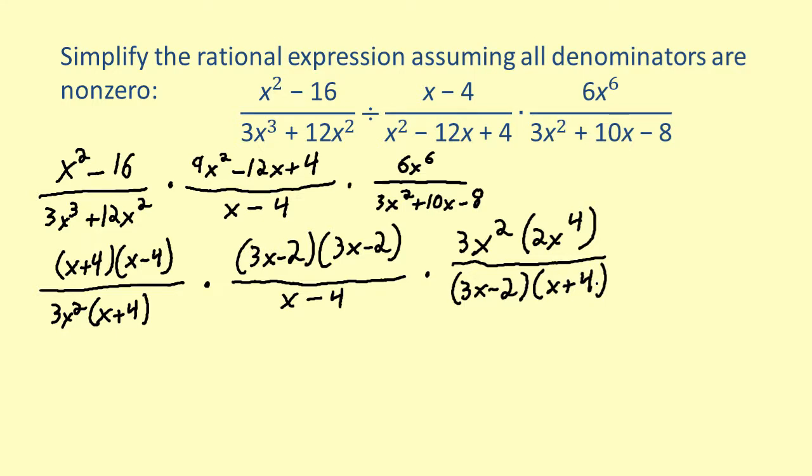Now that all three terms are in complete factored form, we can begin the final step of canceling common factors. The factor (x + 4) can be canceled. The factor (3x - 2) can be canceled. The factor (x - 4) can be canceled. The factor 3x² can be canceled.